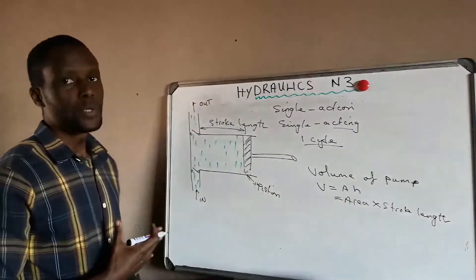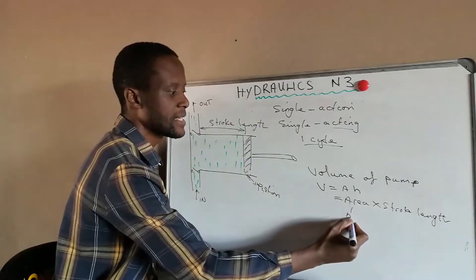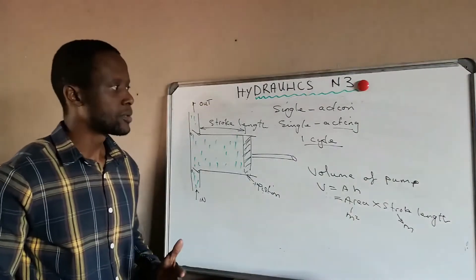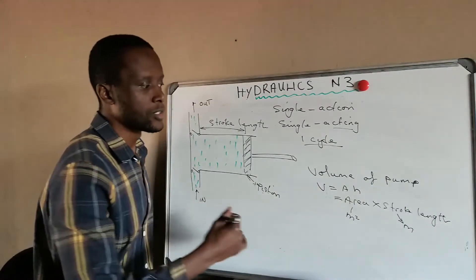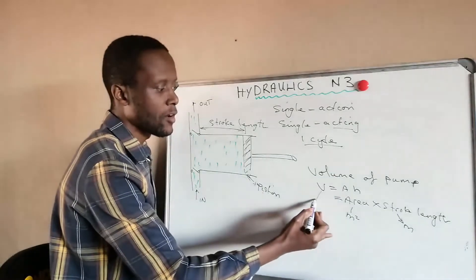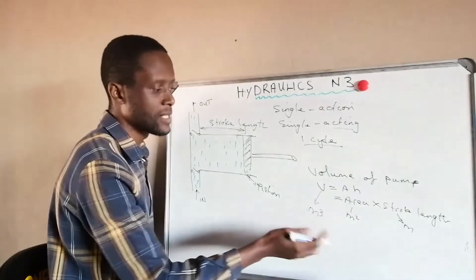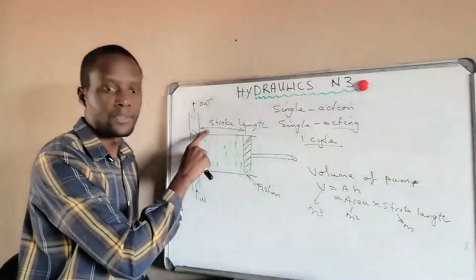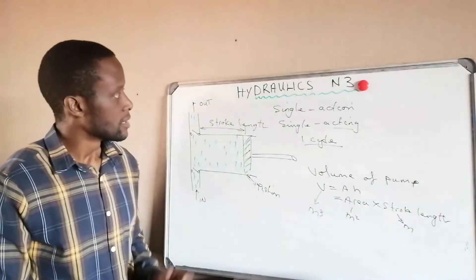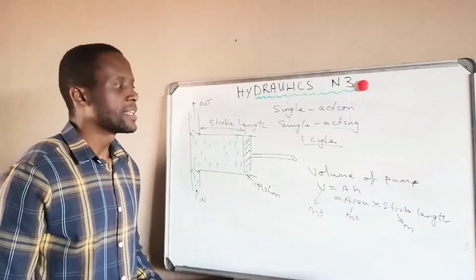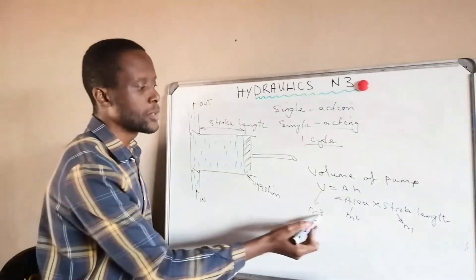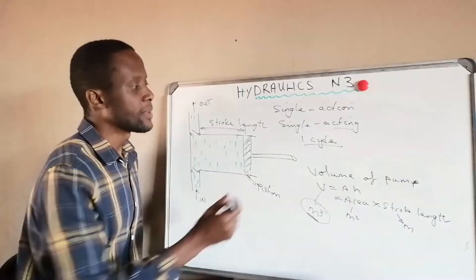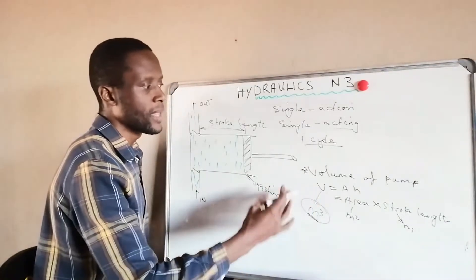When calculating volume, make sure your area is in square meters and your stroke length is also in meters, so it becomes much easier to convert to liters and so on. We always want our volume in cubic meters. If given in centimeters or millimeters, convert to meters first. Our aim is always to give the answer in cubic meters.